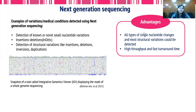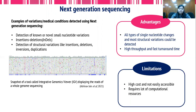The advantages of next generation sequencing are that it can be used to detect any single nucleotide variation or most structural variations. It is a very high-throughput technique with a very fast turnaround time compared to low-throughput techniques like Sanger. However, a limitation is that next generation sequencing is not very cost-effective, not easily accessible, and it requires a lot of expertise for analyzing the resulting genome, exome, or panel data.